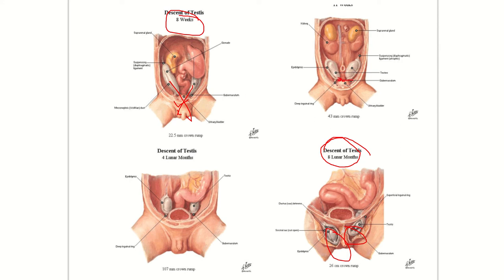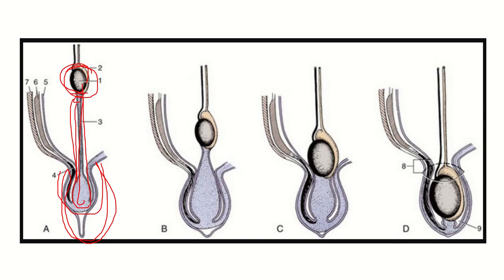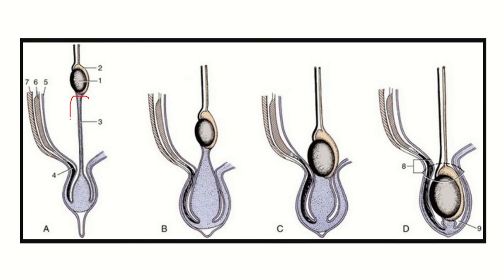We can see one structure connected to the testis — a fibrous structure connected to the testis from above and below. The testis lies initially in the posterior abdominal wall, and the scrotum is below. There is a fibrous structure extending from the lower part of the testis to the bottom of the scrotum, and this fibrous structure is responsible for the descent of the testis.